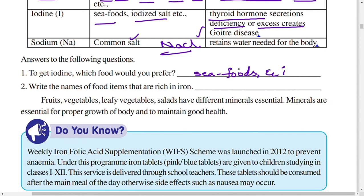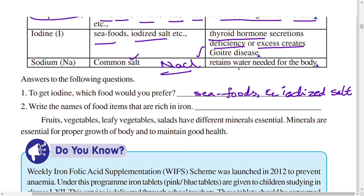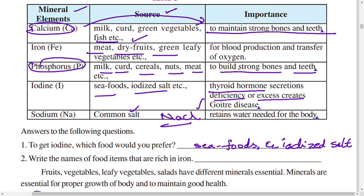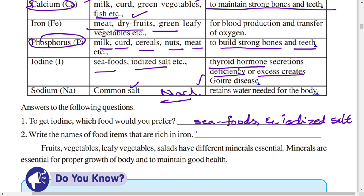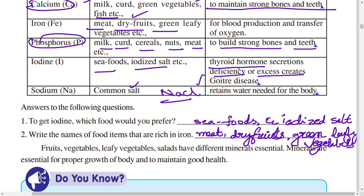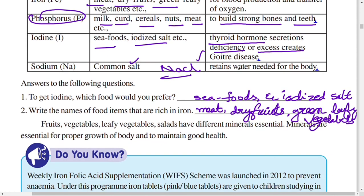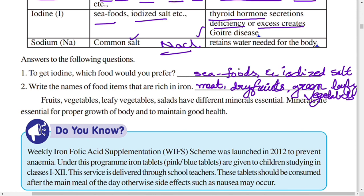To get iodine, you should prefer seafood and iodized salt. Food items rich in iron include meat, dry fruits, and green leafy vegetables. These are all rich sources of iron. Fruits, vegetables, leafy vegetables, and salads provide different essential minerals necessary for proper growth and good health.